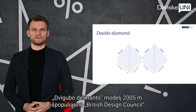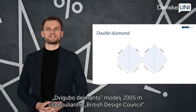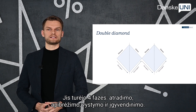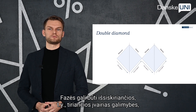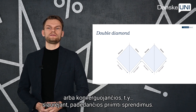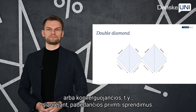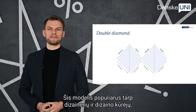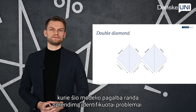The original double diamond model was popularized by the British Design Council in 2005. It had four phases: discover, define, develop, and deliver. Each phase can be either divergent, which means exploring different possibilities, or convergent, meaning narrowing down options and making choices. It has been popular among many designers, and design thinkers use this model to come up with the right solution for the identified problem.